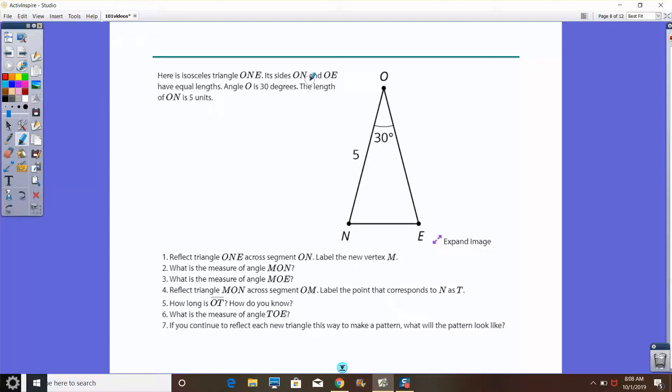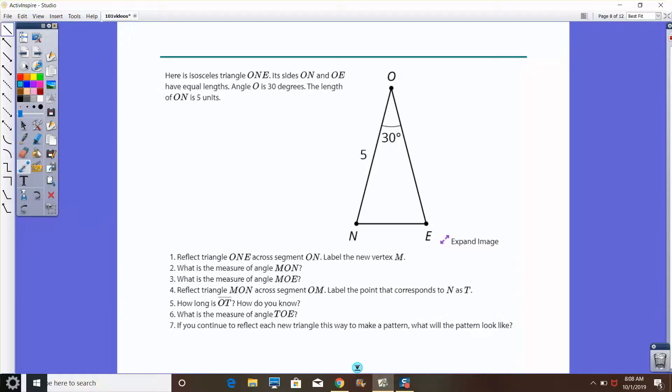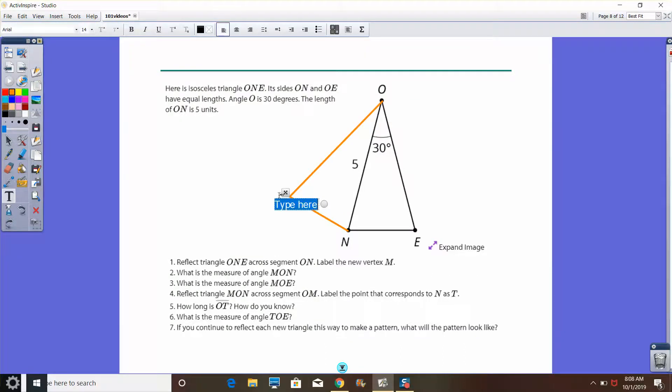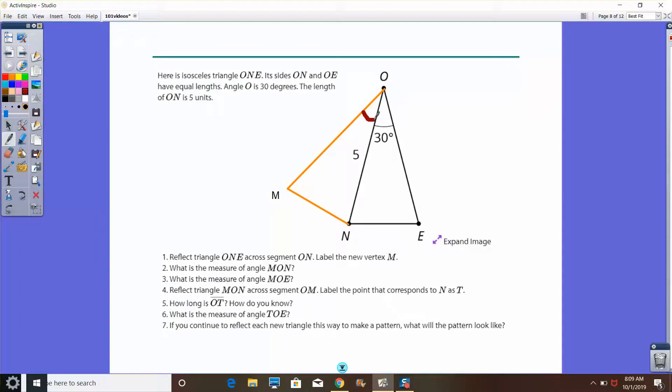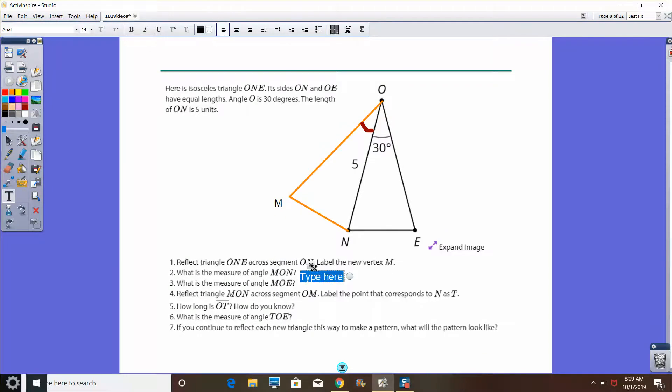Now, here we have an isosceles triangle ONE. The sides ON and OE have equal lengths. Angle O is 30 degrees. The length of ON is 5 units. Reflect triangle 1 across segment ON and label the new vertex M. We kind of did this already with our opening, but let's do the same thing. If I use ON as my line of reflection, if I take this triangle and flip it around over this side here, I'm going to end up with a segment that's going to look like this. Here's our new vertex M. What is the measure of angle MON? Well, if I just reflected this, reflection is a rigid transformation. That means that this angle here is going to also be 30 degrees.